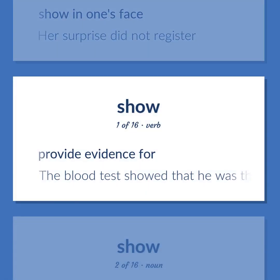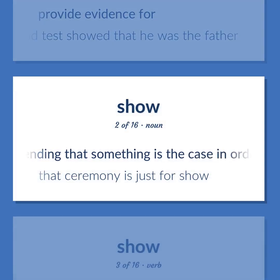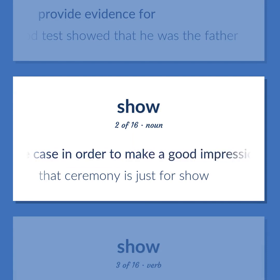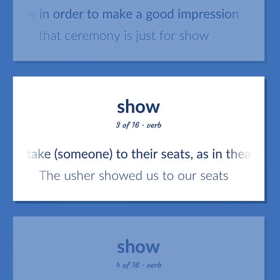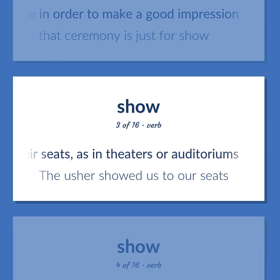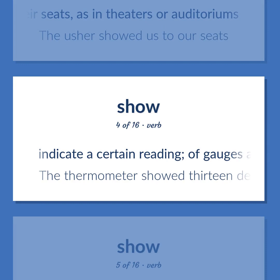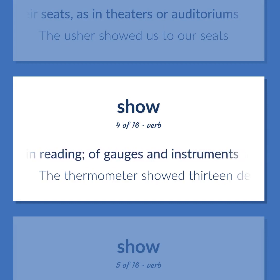Show: provide evidence for — the blood test showed that he was the father. Pretending that something is the case in order to make a good impression — that ceremony is just for show. Take someone to their seats, as in theaters or auditoriums — the usher showed us to our seats. Indicate a certain reading of gauges and instruments — the thermometer showed 13 degrees below zero.